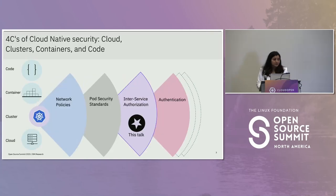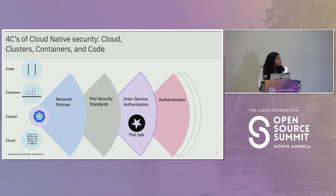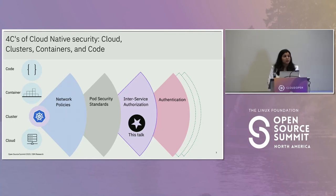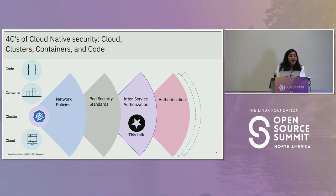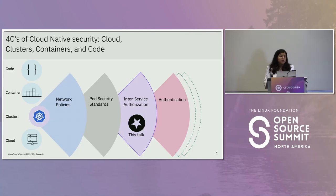There are four Cs of cloud-native security. We approach security of cloud through four dimensions: code, container, cluster, and cloud. At the code level, we ensure that security has been practiced at the implementation level. At the container level, we ensure security in terms of image loading during deployment. At the cluster level, we majorly focus on Kubernetes and talk about different aspects of security like network policies, pod security standards, inter-service authorization, authentication, and many more.